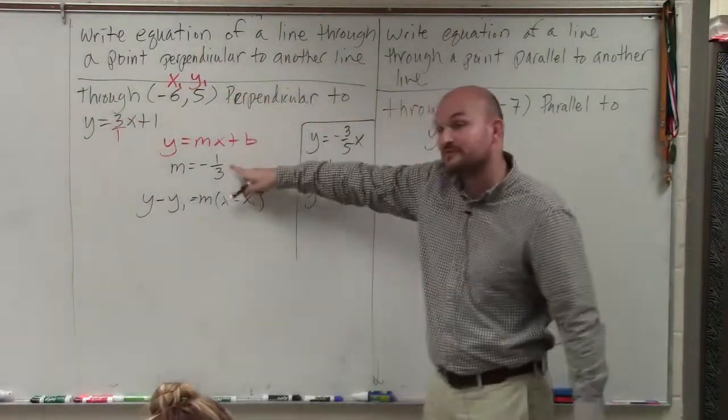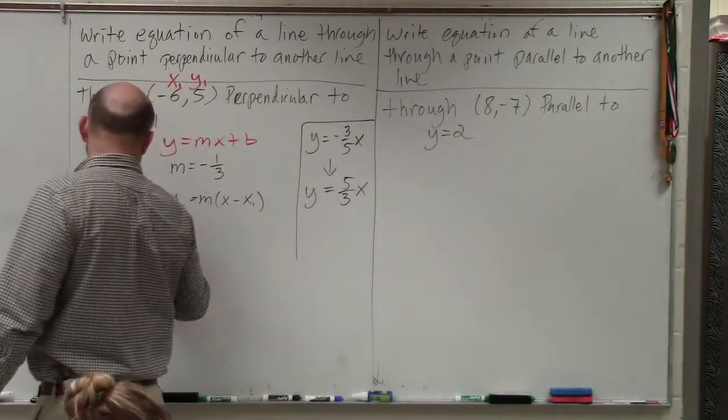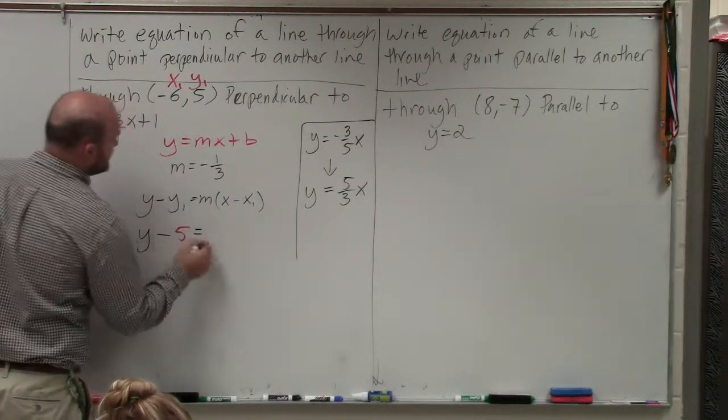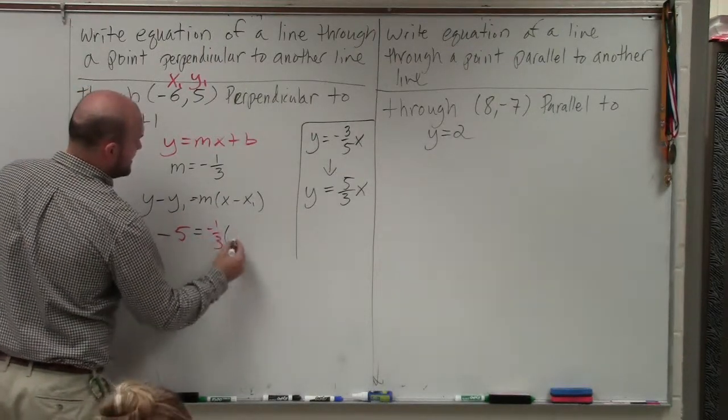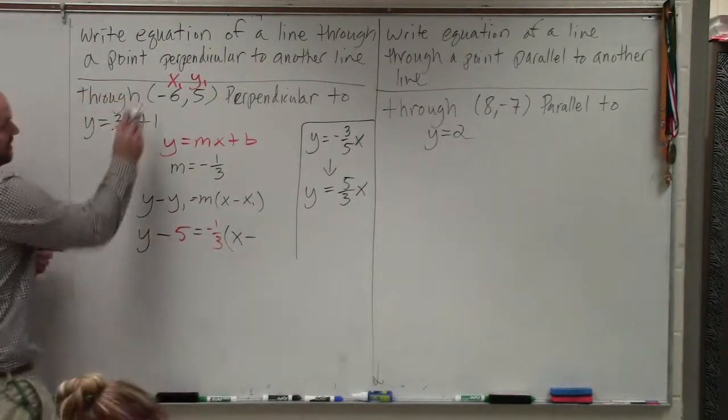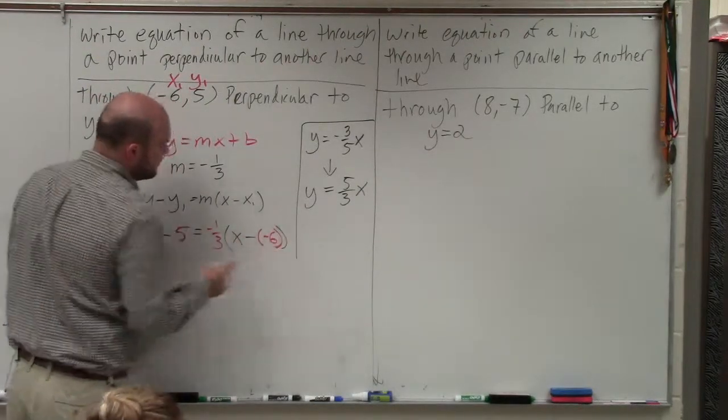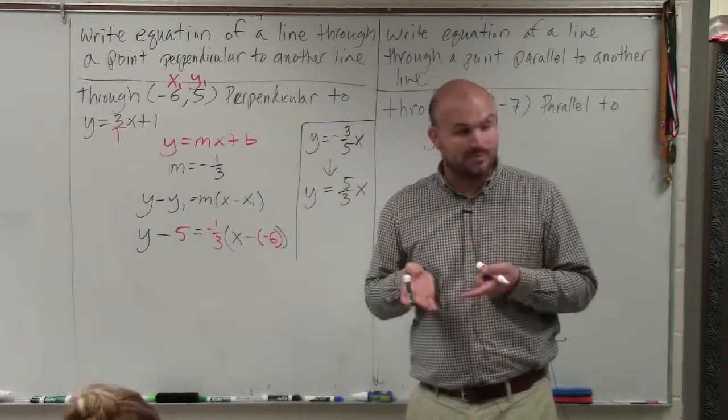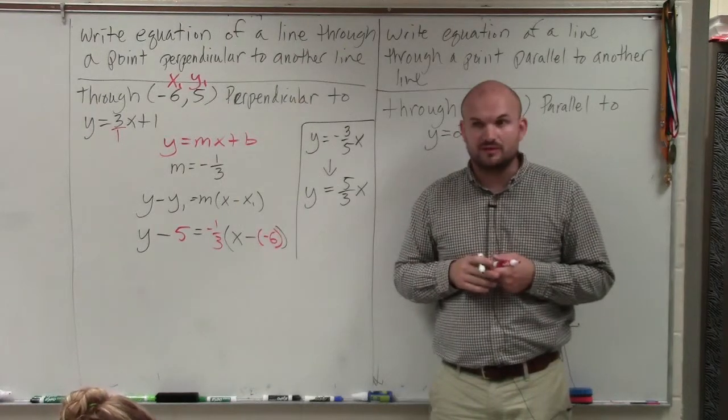Now we have determined our new slope, which is negative 1 third. So we'll just plug in our points. Y minus y1, which is 5, equals our slope, which is negative 1 third, times x minus x1, which is negative 6. See how I plugged in all the information? I plugged in the slope and the point that the line goes through. Any questions up to this point?